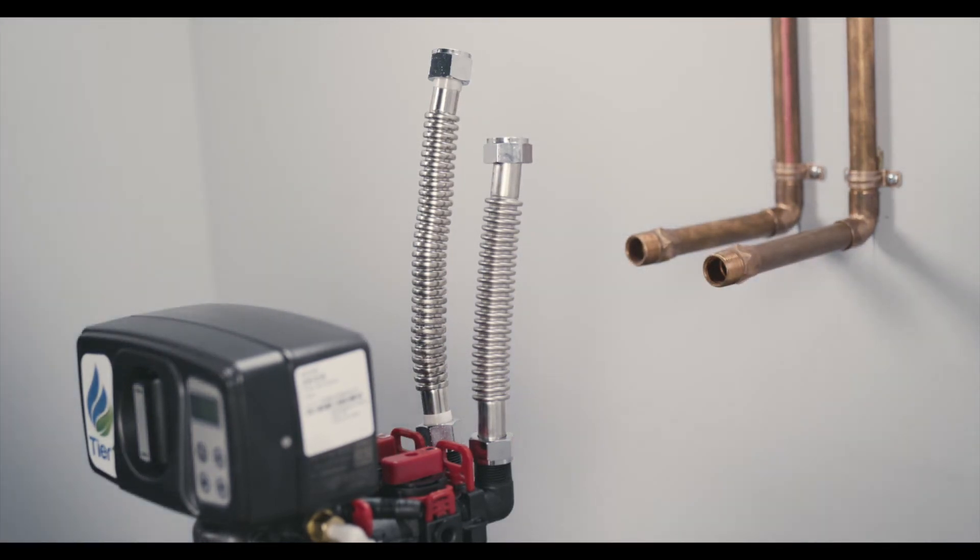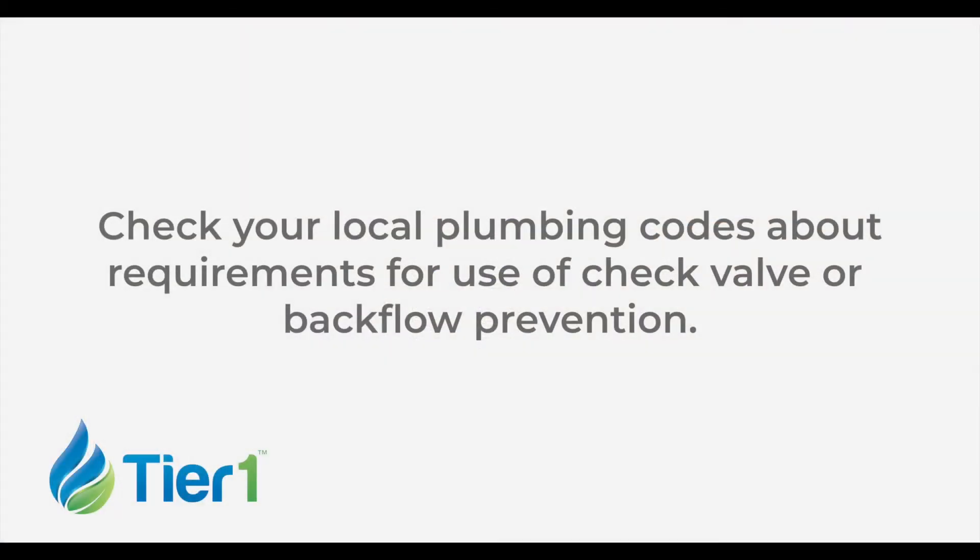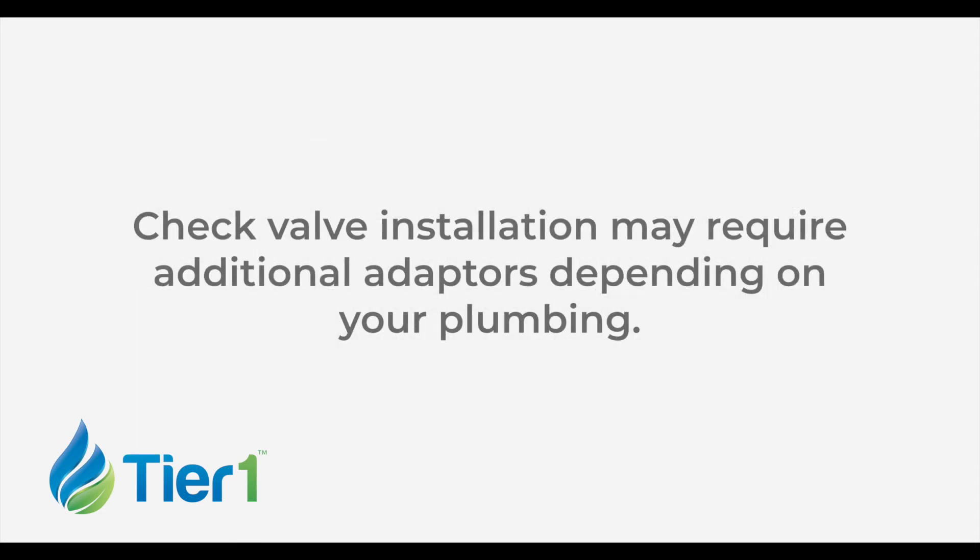If you don't feel comfortable making the connections to your home plumbing, please consult a contractor or installation profession. Please consult your local plumbing codes about requirements for use of a check valve or backflow prevention. Outside faucets used to water lawns and gardens should not supply treated water. This may also require the installation of a check valve and a new water line connection. Please refer to your owner's manual for more information. Please note that you may need to use additional adapters to install a check valve depending on your plumbing.